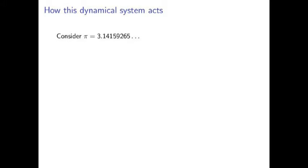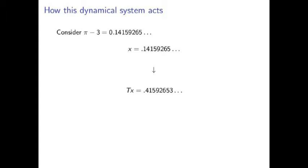Let's give an example. Say we start with π. Well, okay, we can't really start with π because π is greater than 1. But if we start with π minus 3, then we start with the decimal expansion 0.14159265 and so on. If we apply the transformation to it, we first push the decimal position one to the right, remove the 1, and are left with 0.4159265 and so on. We can apply the transformation again and get 0.15926535.